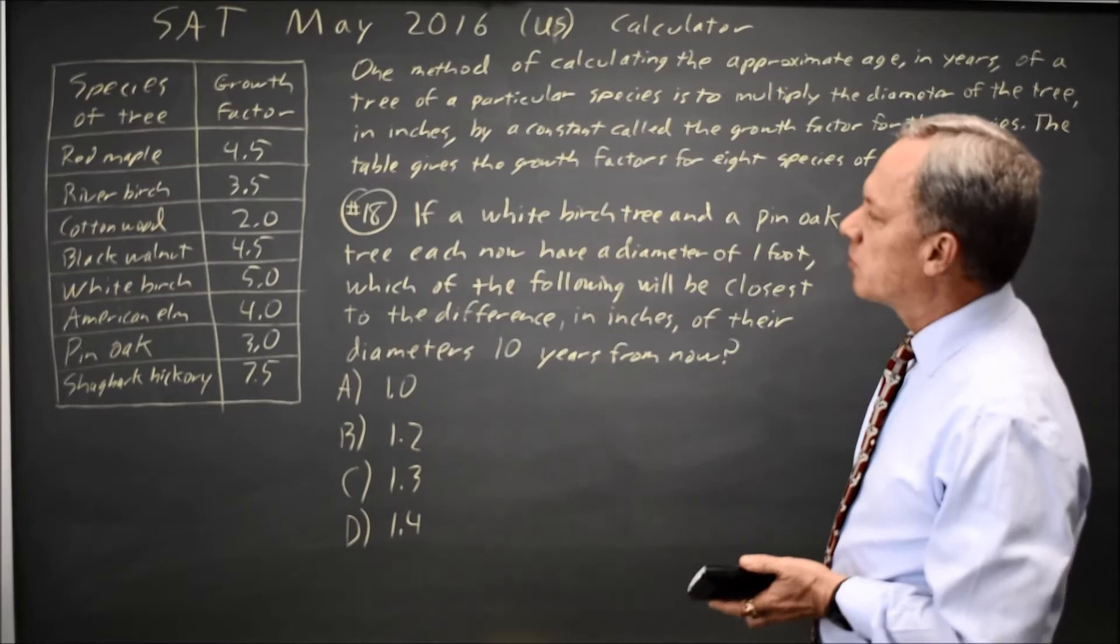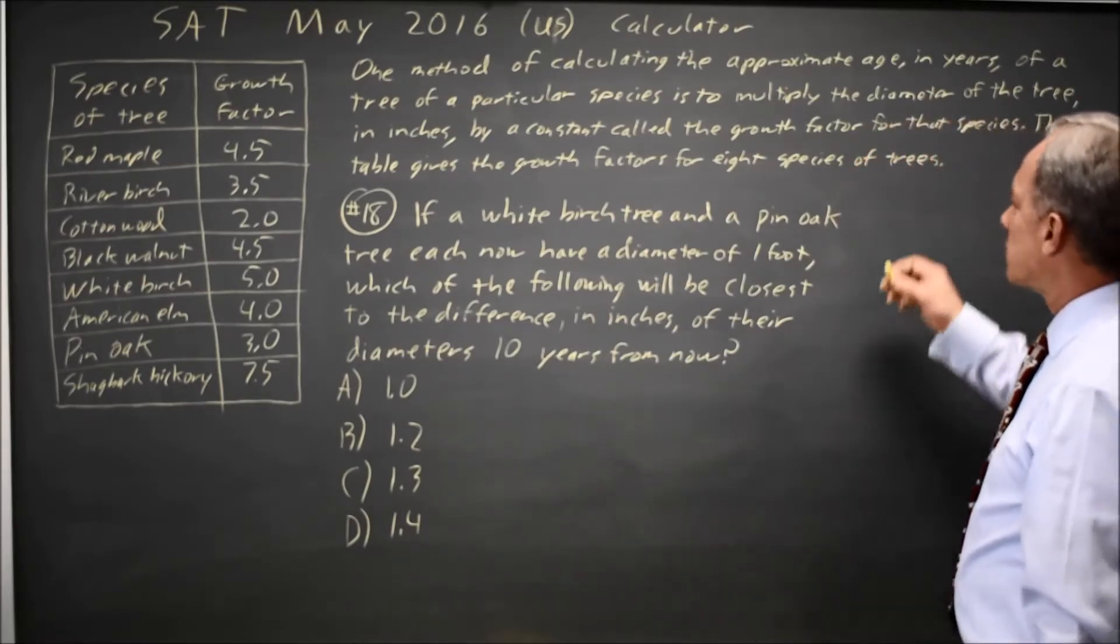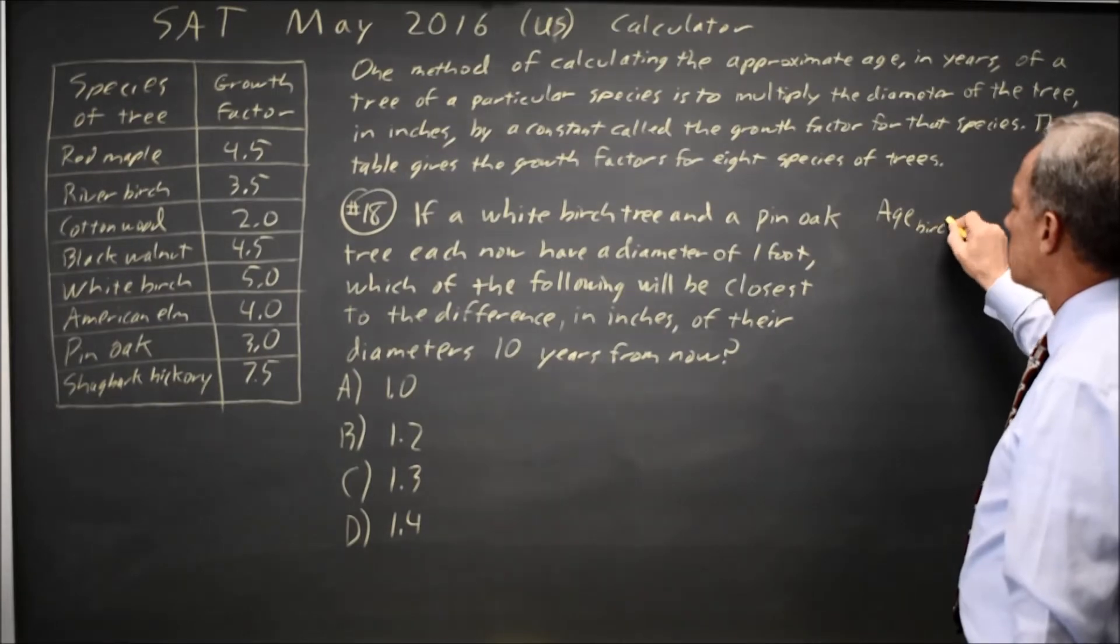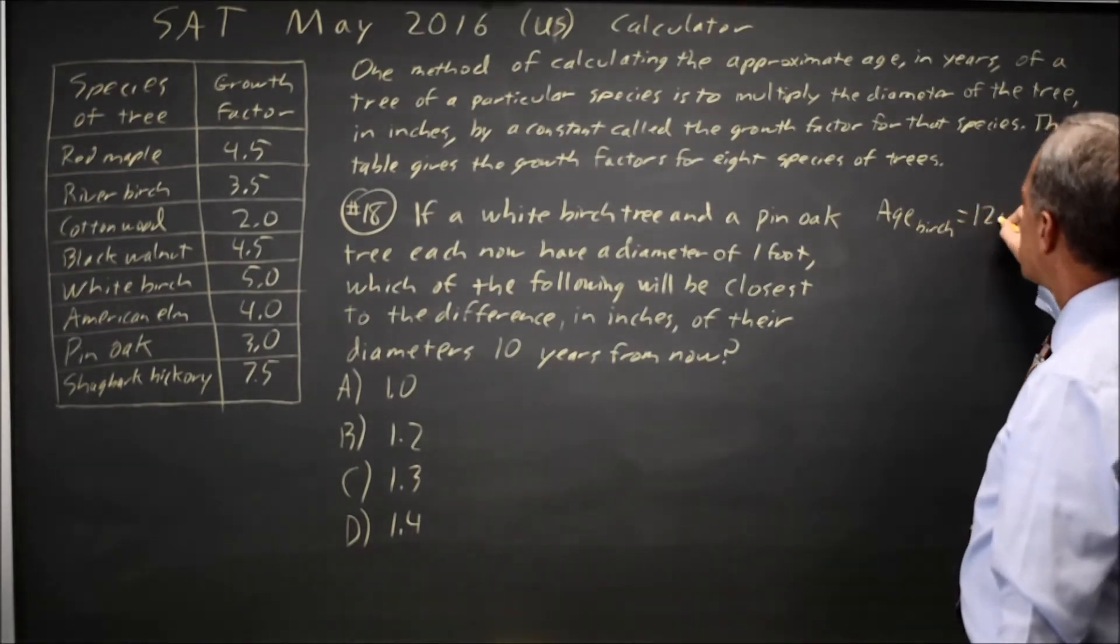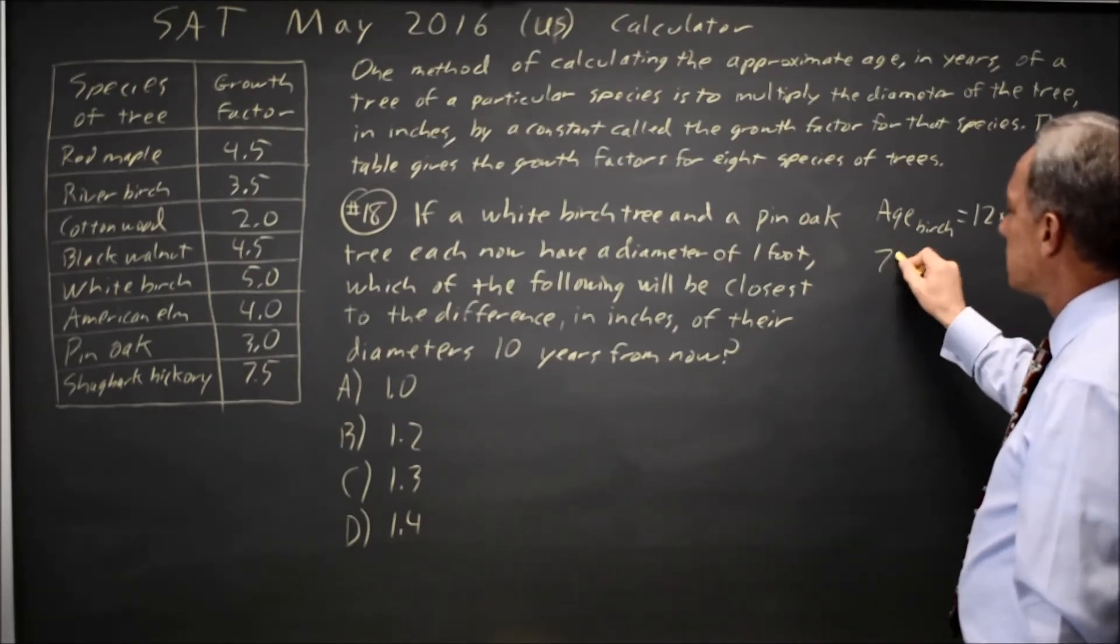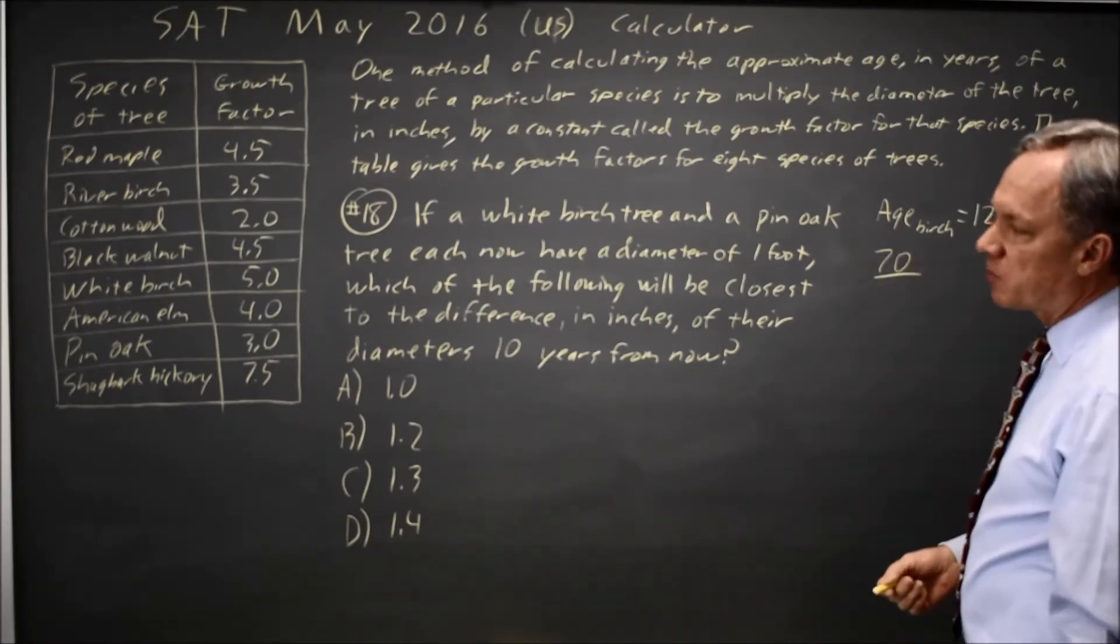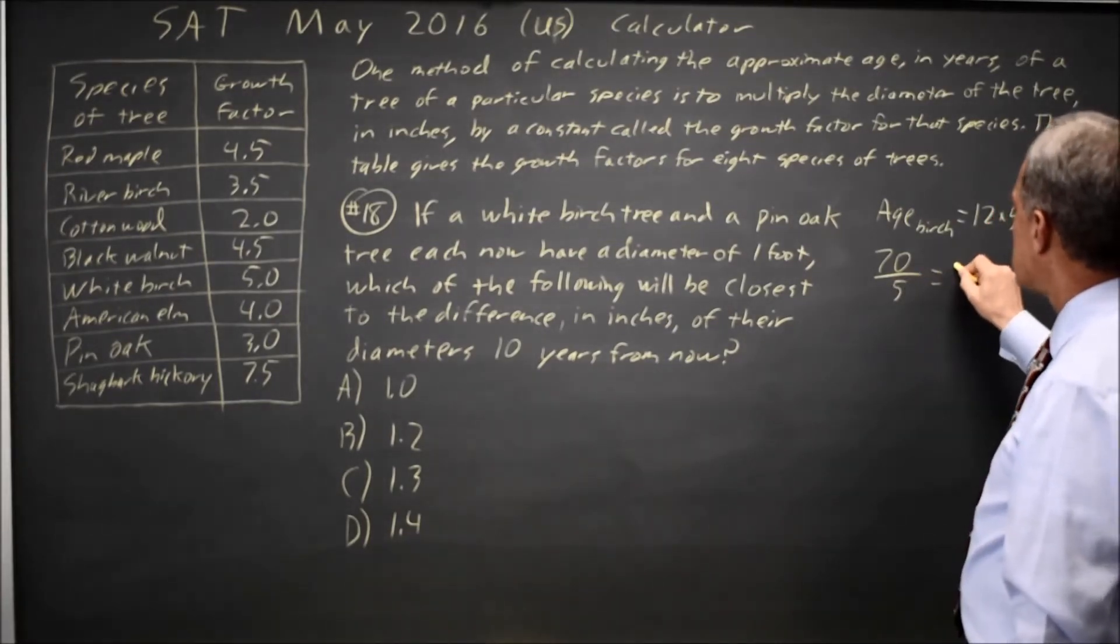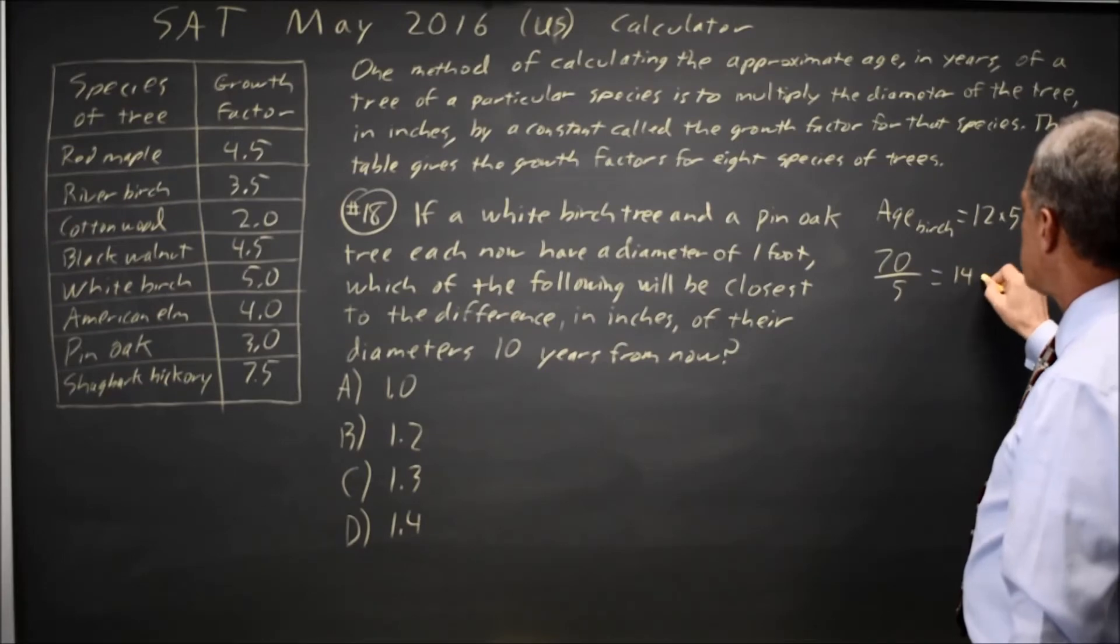For a white birch, the growth factor is 5. So the age of the birch is 12 times 5 equals 60. Add 10 years and you get age 70. 70 divided by the growth factor of 5 for a birch equals 14 inches.